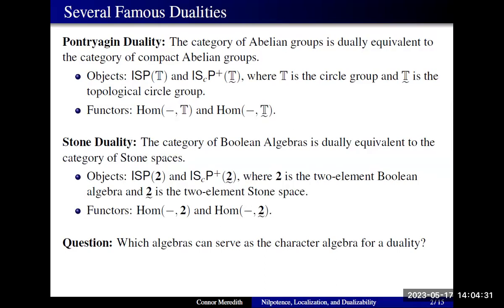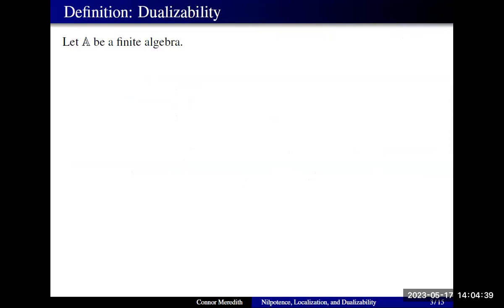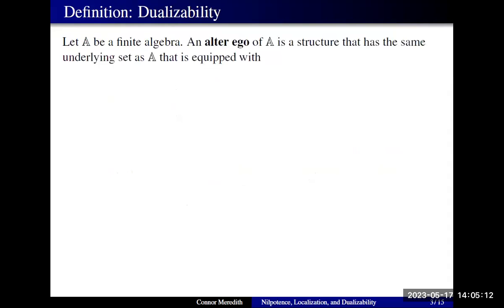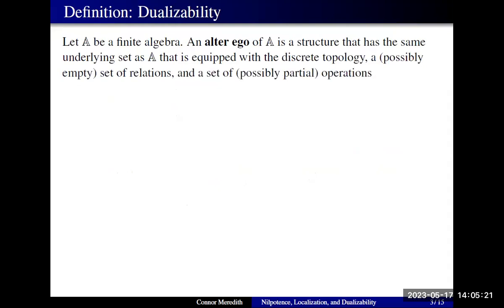Which other algebras can serve as a character object for a duality? That leads to this definition: we'll start with a finite algebra. We first want to nail down what sort of companion comes with one of these special algebras. You'll notice the circle group and topological circle group have the same underlying set, and the two-element Boolean algebra and the two-element Stone space have the same underlying set. So given a finite algebra A, we say an alter ego of A is a structure with the same underlying set, equipped with the discrete topology, some set of relations, and some set of operations, subject to some compatibility conditions.